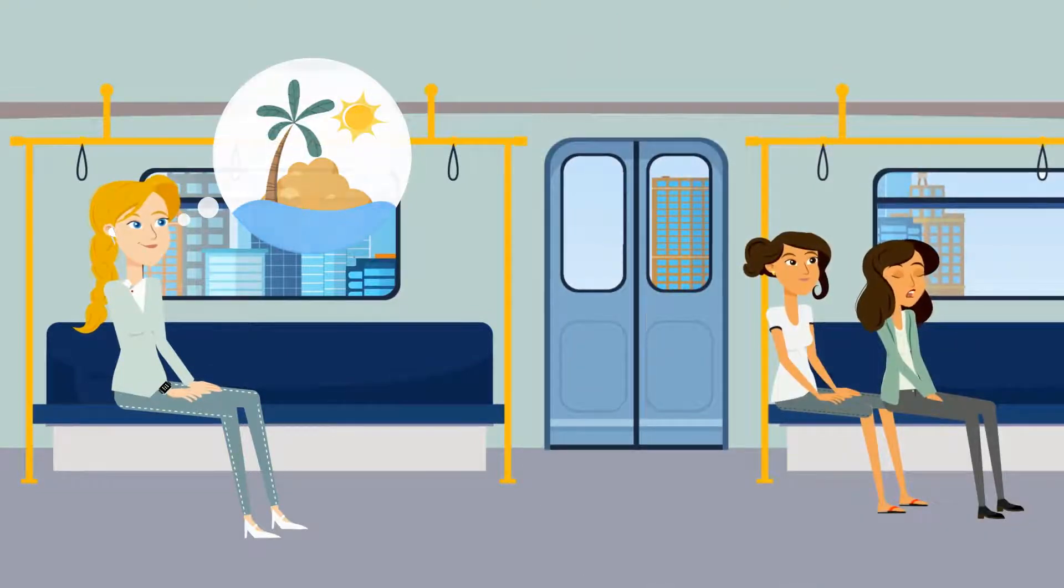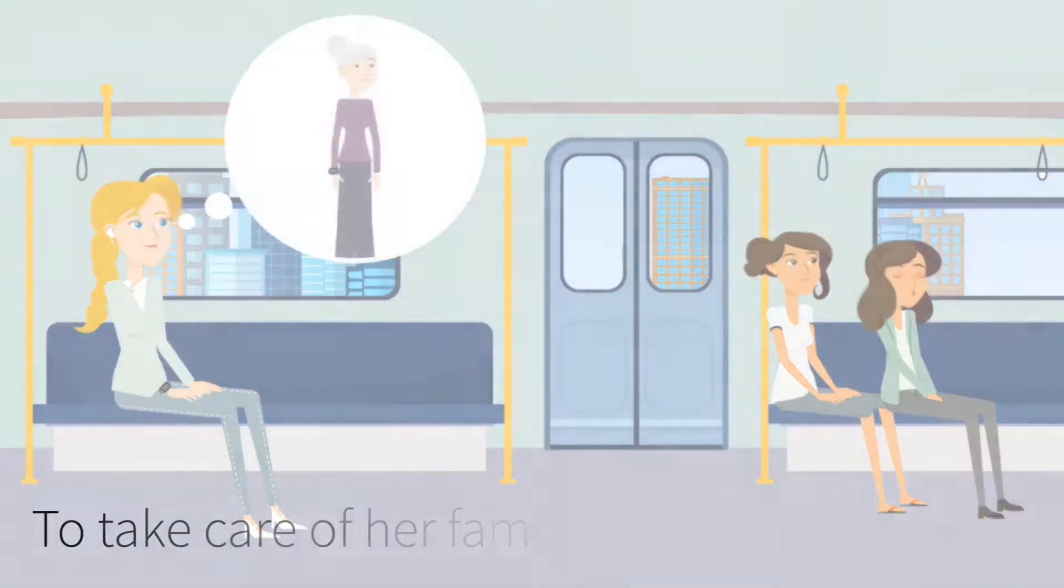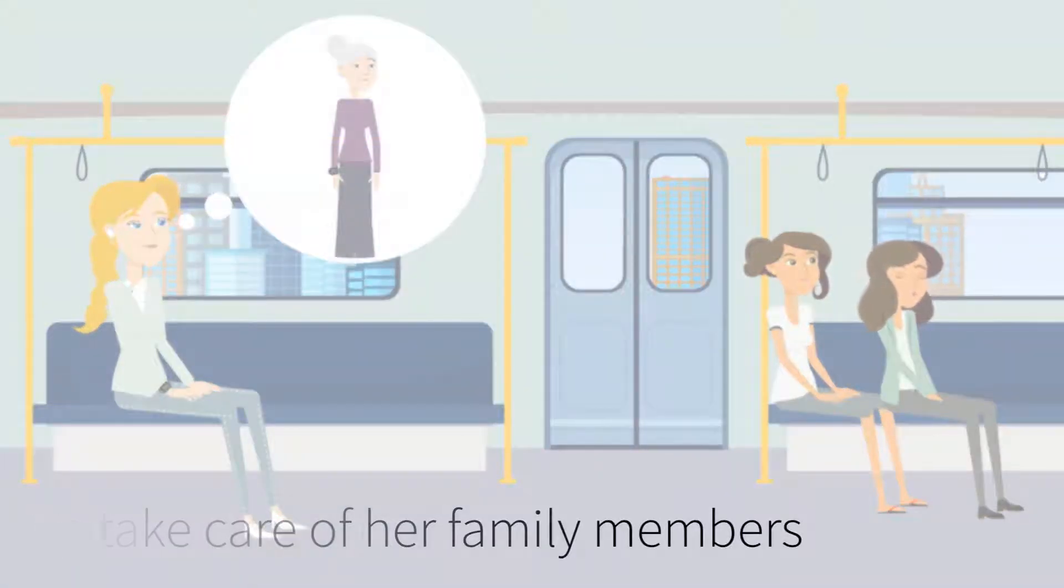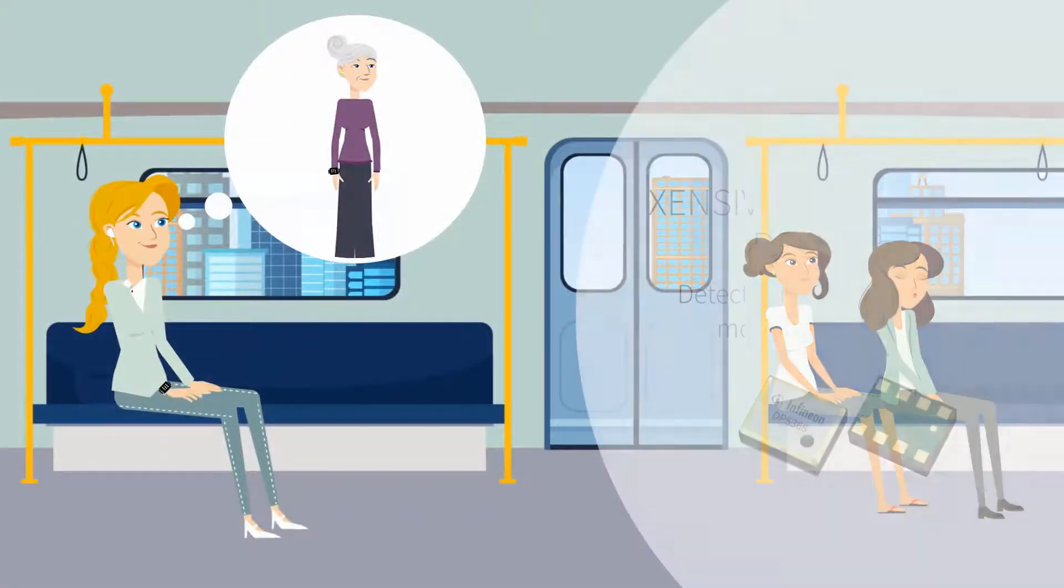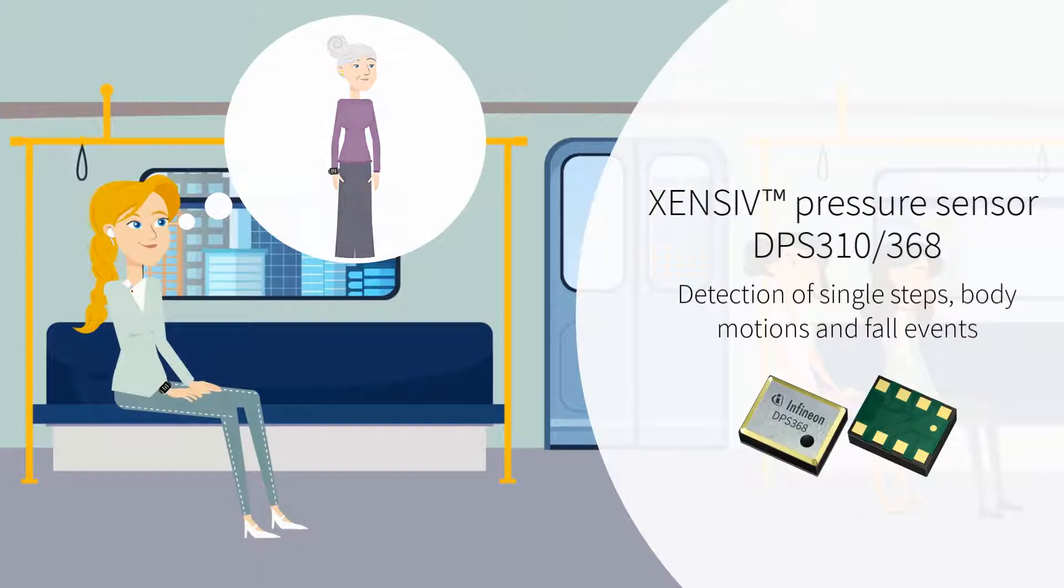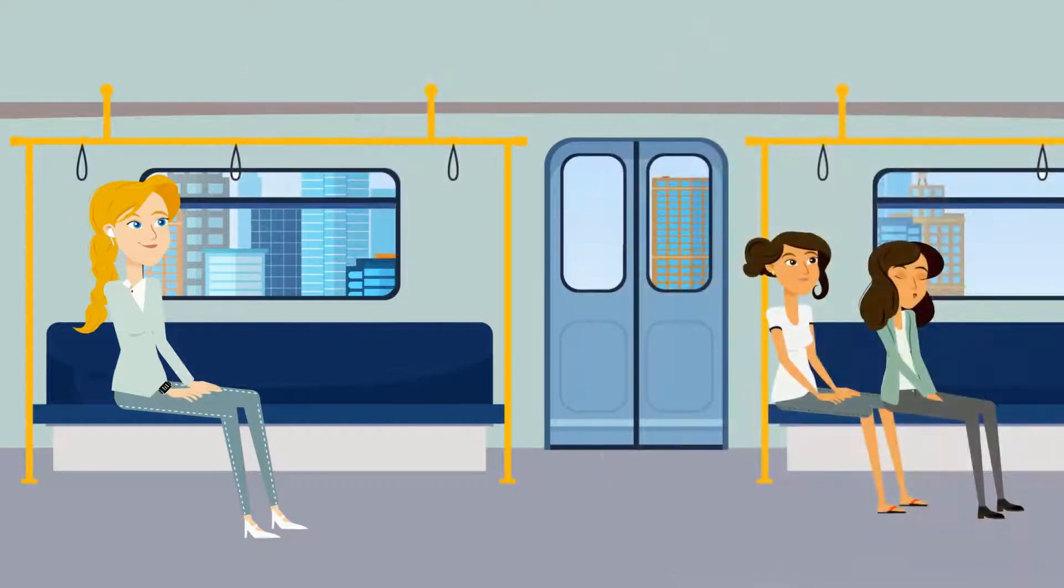And that's not all. On hectic days, Anna still has the time to take care of her family members and keep track of their well-being. Her grandmother wears a dedicated wristband which includes Infineon's barometric pressure sensor. Anna immediately gets notified in case of a fall event. That's a huge relief for her, knowing that she can count on this support.